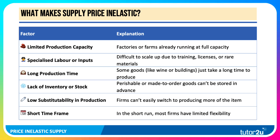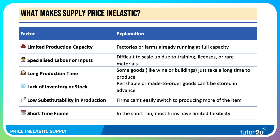Firms may also be using specialised labour or other inputs, so it's difficult to scale up extra production because of the time, inconvenience, and cost of training or licences, or the supply of rare materials. The actual production of the good or service may have a long production time — some goods, like wine or new buildings, just take a long time to plan and produce.